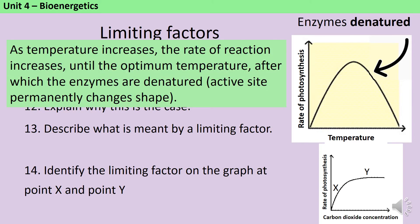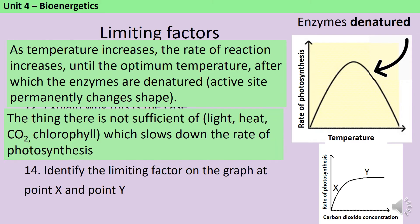A limiting factor is the thing that is slowing down a chemical reaction — in this instance, photosynthesis. So it could be that there's insufficient light, it could be that it's too cold, it could be that there's not enough carbon dioxide, or it could be that the leaves don't have sufficient chlorophyll. But whatever it is, it's the one factor that is slowing down photosynthesis.